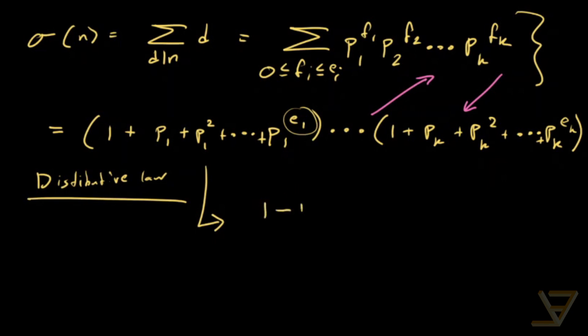1 minus p1 to the e1 plus 1 over 1 minus p1, all the way through to 1 minus pk to the ek plus 1 over 1 minus pk.